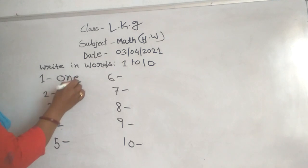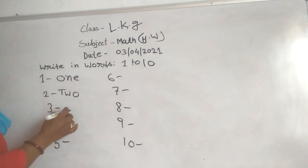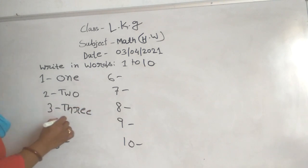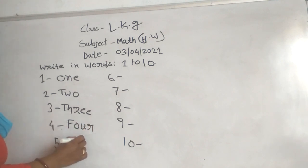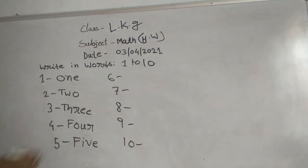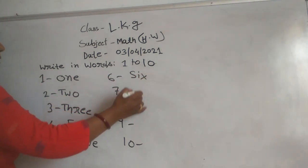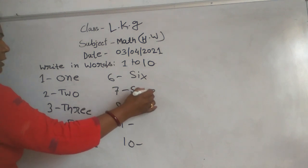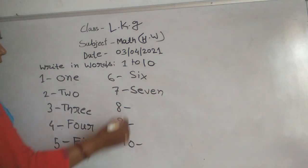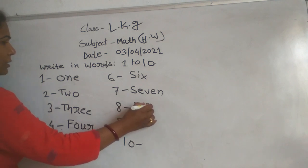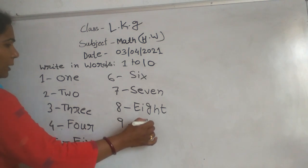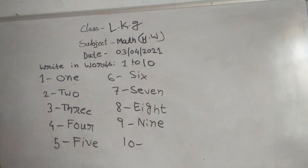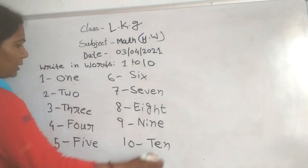1 O-N-E 1, 2 T-W-O 2, 3 T-H-R-E-E 3, 4 F-O-U-R 4, 5 F-I-V-E 5, 6 S-I-X 6, 7 S-E-V-E-N 7, 8 E-I-G-H-T 8, 9 N-I-N-E 9, 10 T-E-N 10.